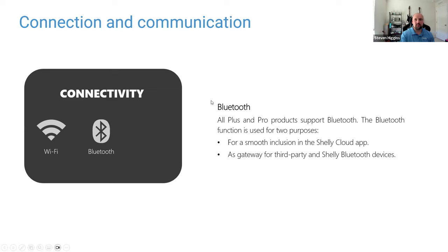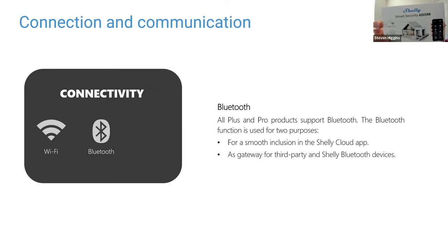All Plus and Pro devices support Bluetooth. This allows our Bluetooth sensors to connect to all those Wi-Fi devices and adds a gateway for Shelly Bluetooth devices. If you have a Wi-Fi device installed and want to add Bluetooth sensors, you can do that. If you don't have any Plus or Pro devices, you can still use the Bluetooth sensors, but you'd need our Blue Gateway — it's a little Bluetooth dongle, just like a Bluetooth mouse, that plugs straight in and scans for any Bluetooth sensors.